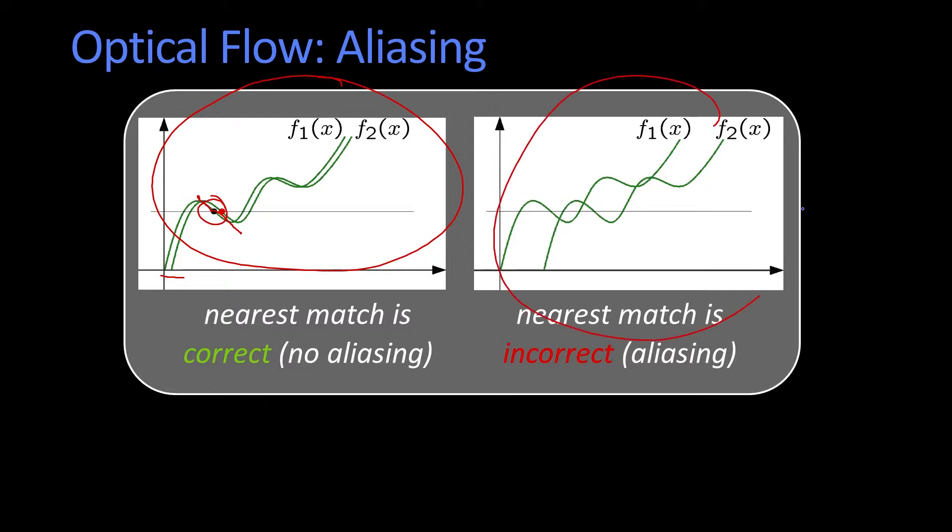But over here, I've got a different situation. There's one point. The nearest match will now be this red point. So it has just estimated the change to be that much, where the actual shift is much, much more. And so the estimated shift is too small. So the question is, how would you fix that?